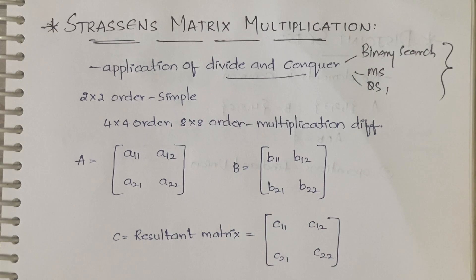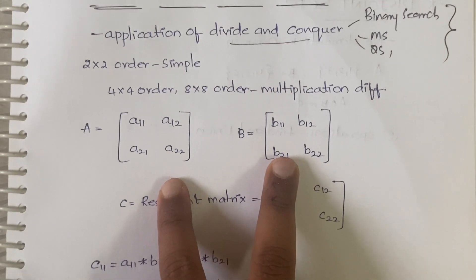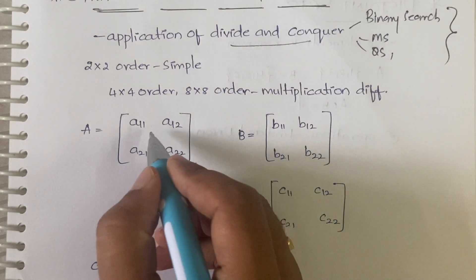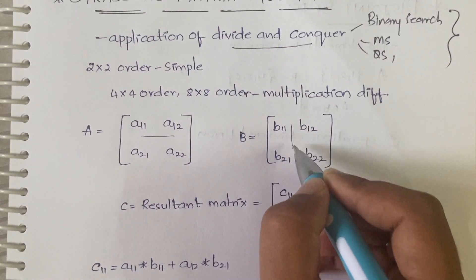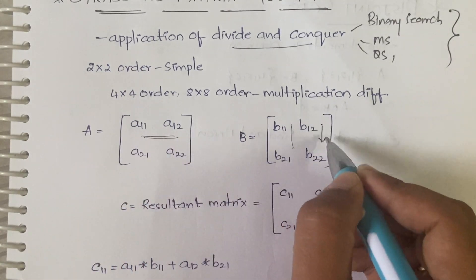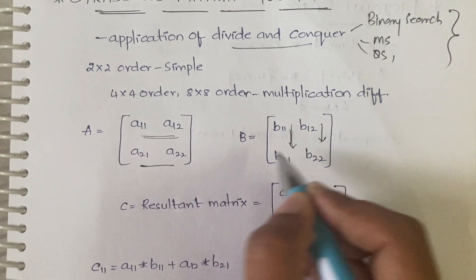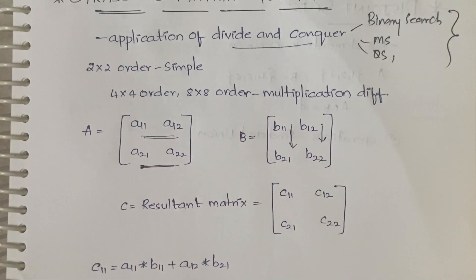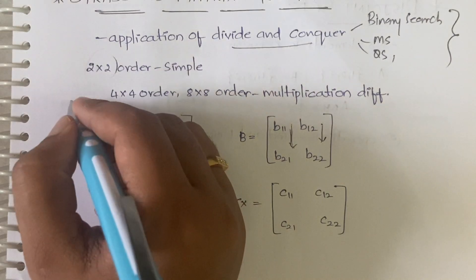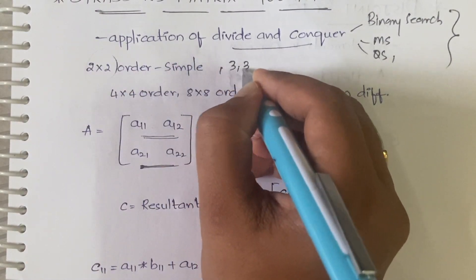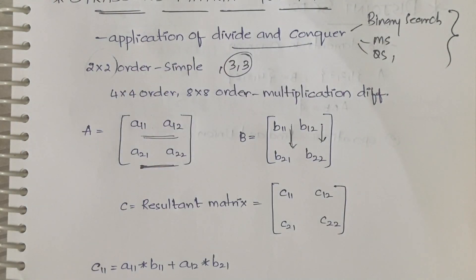You already know what matrix multiplication is — how you multiply two matrices. Suppose you have two matrices: you take this row with this column, then this row with this column, again this row with this column, and this row with this column. That is how you do matrix multiplication. If the order is 2x2 or 3x3, you know how to do it.